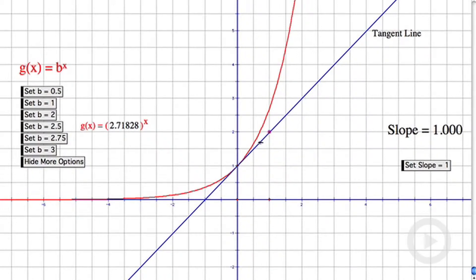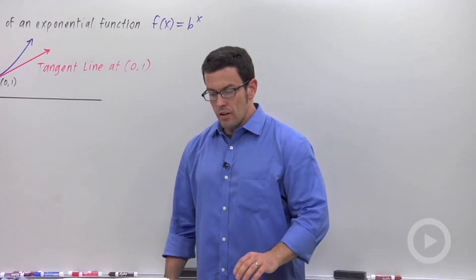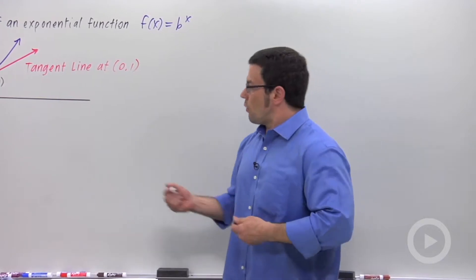It's the only base that will make it so that the tangent line has a slope of exactly 1 at (0,1). Okay, so let's summarize what we discovered.